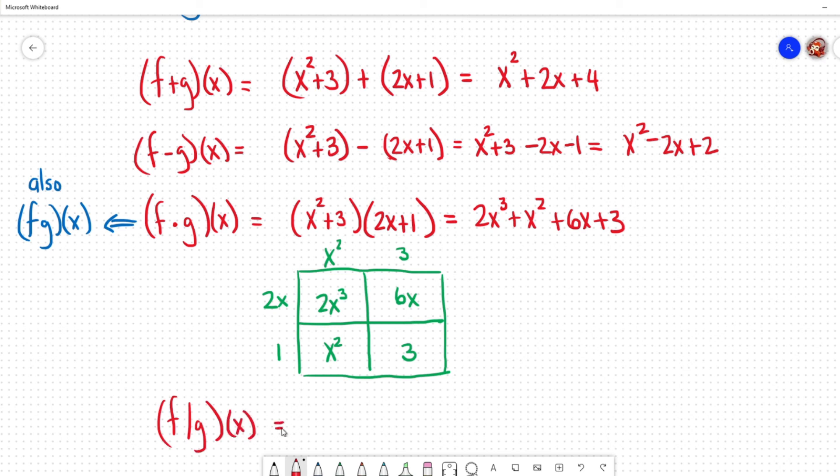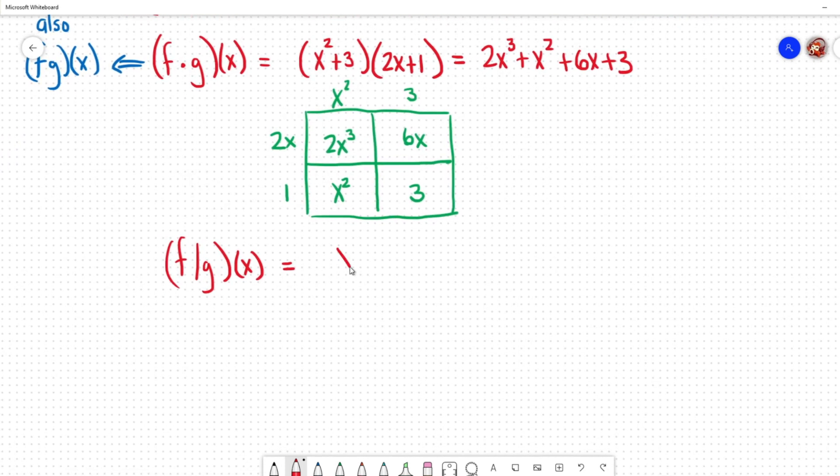Now the last part which actually ends up being the easiest operation is this division problem. So f divided by g of x. So again I'm going to wrap the functions in parentheses because I'm dividing by all of g of x. So x squared plus 3 divided by all of g of x which is going to be that 2x plus 1. So 2x plus 1 and I put those parentheses there. Now this is the easiest one because nothing will reduce. I can't factor the polynomial at the top and nothing will cancel with the one on the bottom. Now a common mistake here in trying to simplify would be to try to cancel away the x's. And that can't happen.